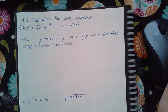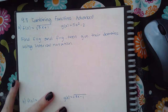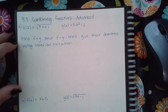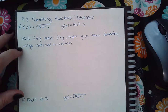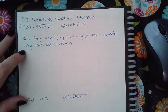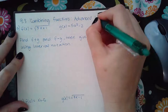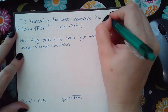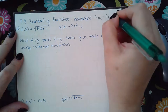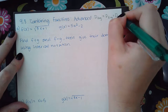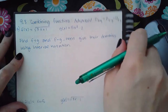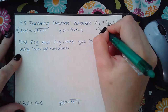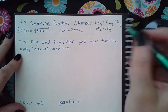Here we are with 9.8 combining functions advanced. We want to find f plus g and f times g and give their domains using interval notation. The domain of f plus g is the same as the domain of f minus g, and that's the same as the domain of f times g. Every single one of those is the domain of f intersected with the domain of g.